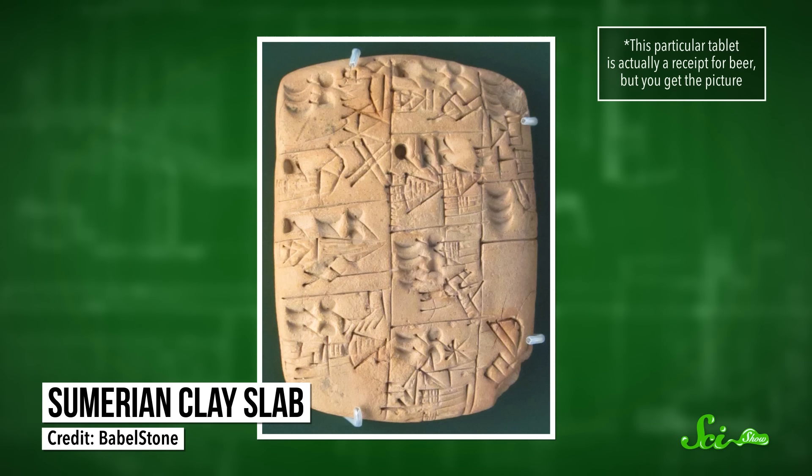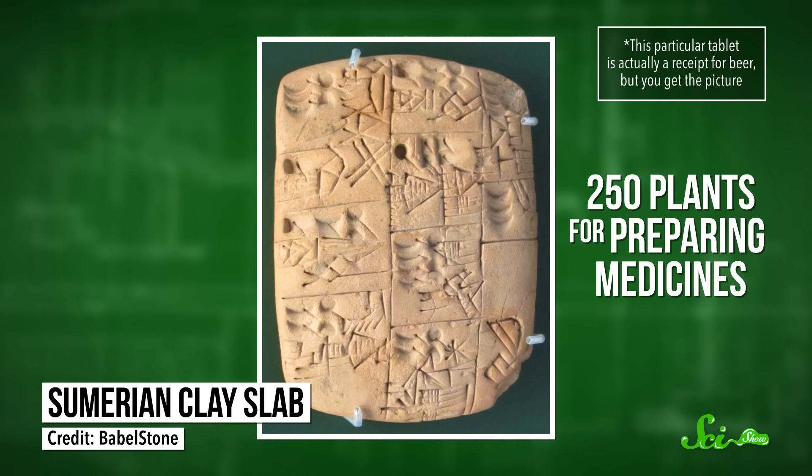That's how we ended up with recipes that are about as old as writing itself, like the 5,000-year-old Sumerian clay slab that lists 250 plants for preparing medicines. Of course, the recipes don't always work, and there are plenty of old herbal remedies that do absolutely nothing. But a few did work, and we still use some of them in medicines today.